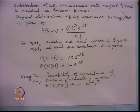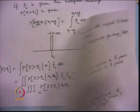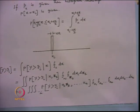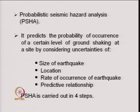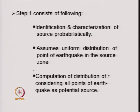Knowing λ(ȳ), one can work out the probability of exceedance of that seismic parameter in t years. With this knowledge of statistics of random variables, we look at the different steps for obtaining the probabilistic seismic hazard analysis. PSHA predicts the probability of occurrence of a certain level of ground shaking at a site by considering uncertainties: size of earthquake, location, rate of occurrence of earthquake, and the predictive relationships. Probabilistic seismic hazard analysis is carried out in four steps.